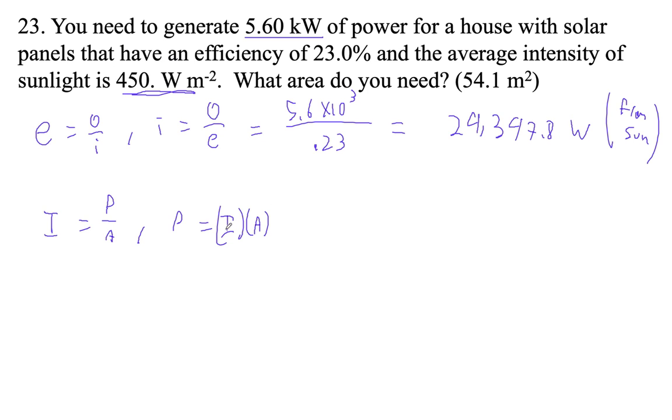So it makes sense, right? Watts per square meter times square meters gives you watts. We know that we want 24,347.8, we need this input from the sun, which is going to equal our intensity, which is 450 watts per square meter times some area.